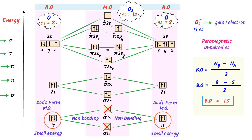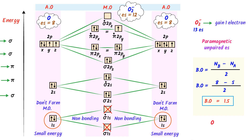At last, here is an important assignment: try to draw the molecular orbital diagram of O2 2-minus ion, find its magnetic nature and bond order, and drop your answers in the comment box.